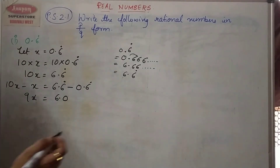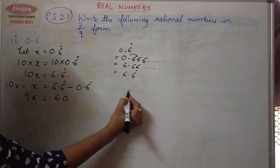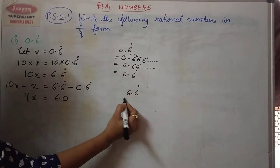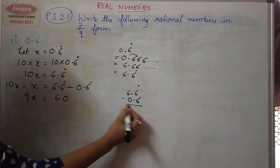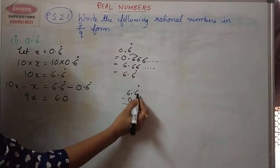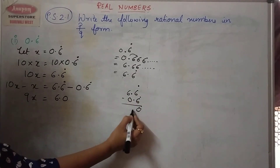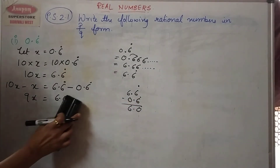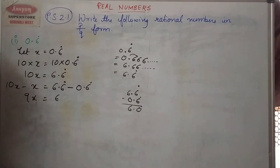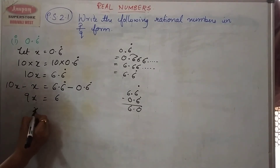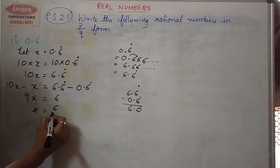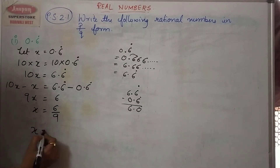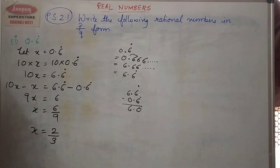Let us see what we get by subtraction: 6.6 minus 0.6. The 6 minus 6 will be 0, and 6 minus 0 will be 6, so our answer is 6. The next step: x is equal to 6 upon 9, so x is equal to 2 upon 3. This is how we get our answer.